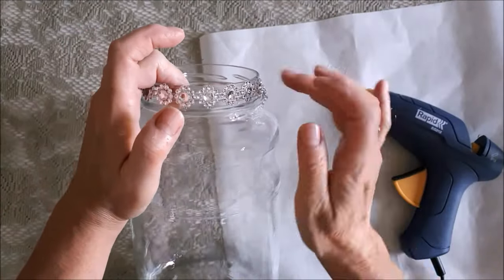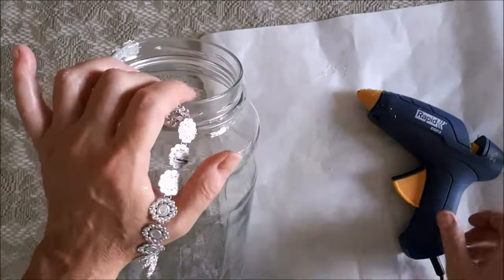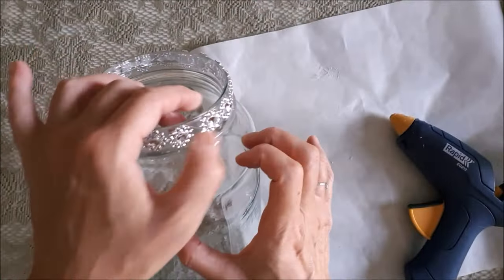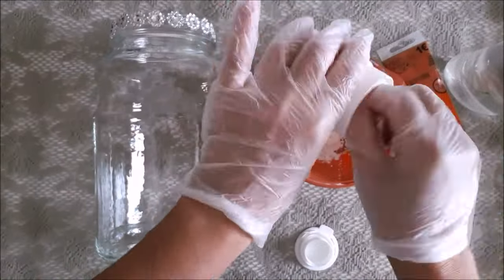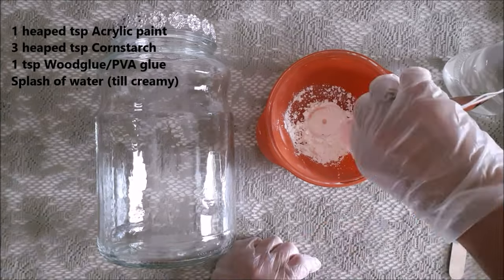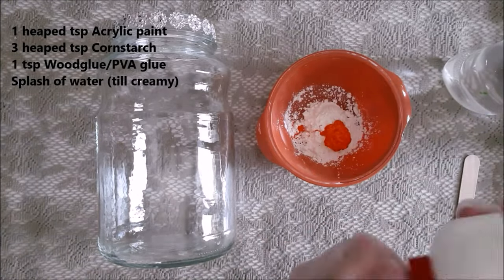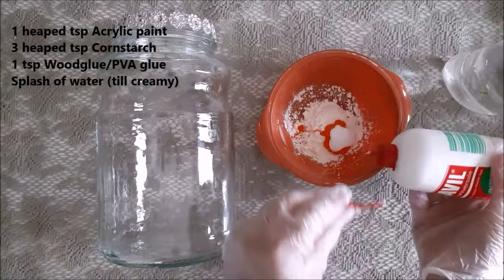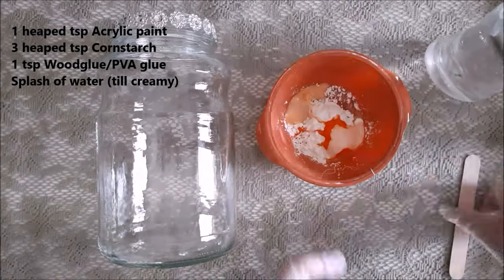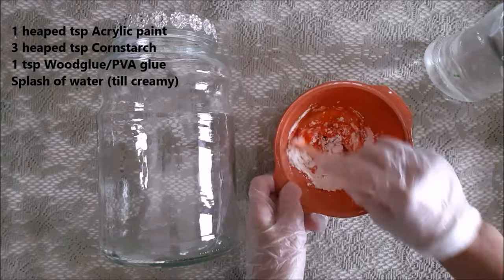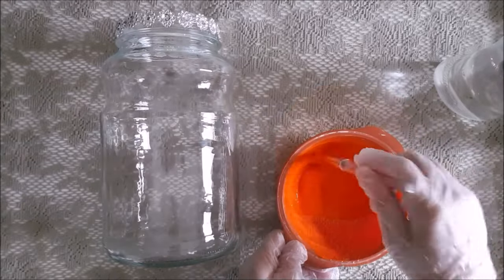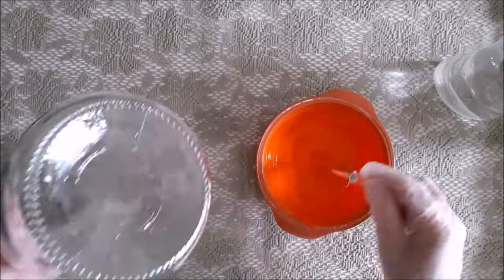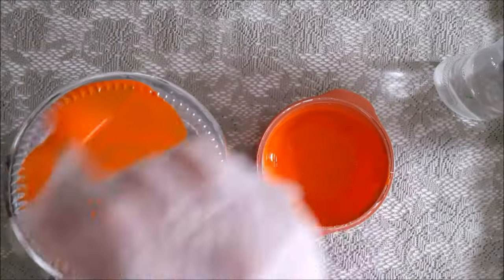The ingredients for my paint are one heaped teaspoon of acrylic paint, three heaped teaspoons of cornstarch, and a teaspoon of wood glue or PVA glue, and a splash of water. Mix very well, add more water if you need. As you can see my paint is orange, and this recipe, these ingredients in the paint, stick on really well to glass.